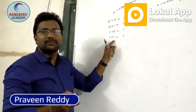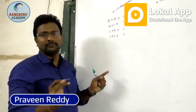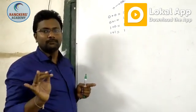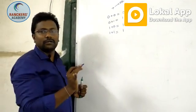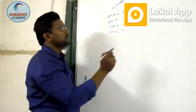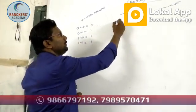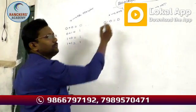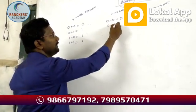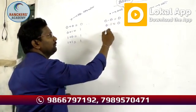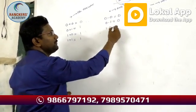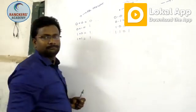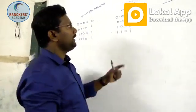Every Boolean expression's corresponding result will be either zero or one — it is a single-valued function. For the AND operator: zero dot zero is zero, zero dot one is zero, one dot zero is zero, one dot one is one.